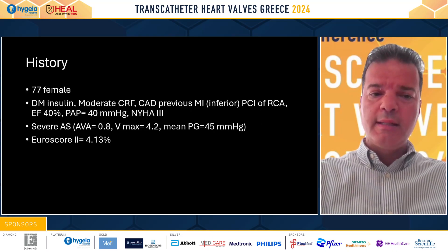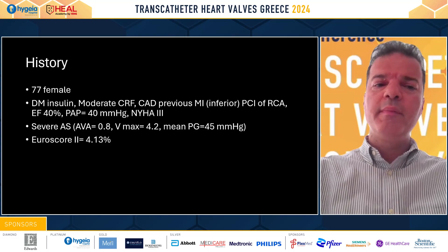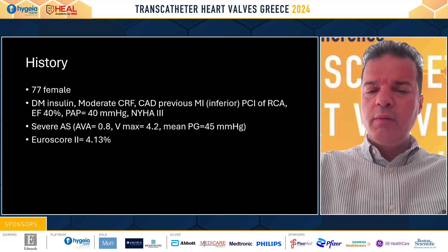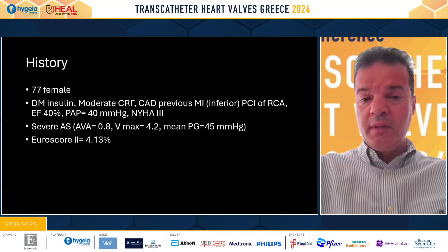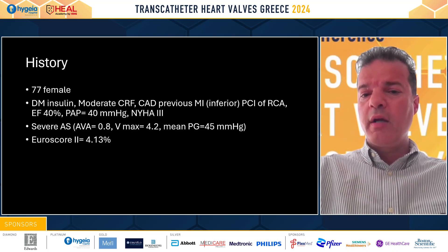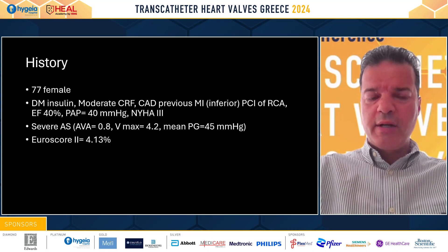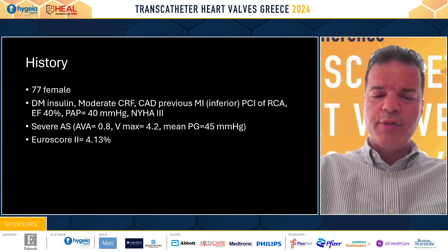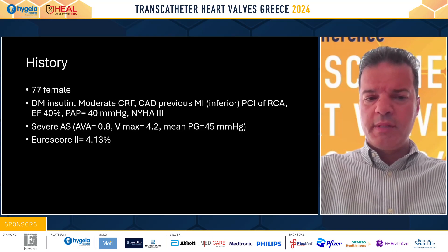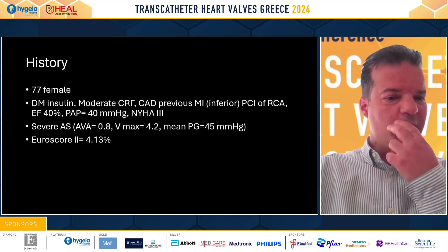It's a 77-year-old female patient, diabetic on insulin, with moderate renal impairment. There's a history of coronary disease — this patient had a previous inferior myocardial infarction with PCI of the right coronary artery. The ejection fraction was somewhat reduced at 40%, with moderate pulmonary hypertension, and she was significantly symptomatic in NYHA class 3.